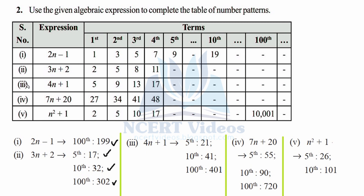For the third expression 4(n + 1), we need to find the 5th, 10th, and 100th terms. For the 5th term: 4×(5+1) = 4×6 — wait, putting n = 5: 5×4 + 1 = 21. For the 10th term: 10×4 + 1 = 41. For the 100th term: 100×4 + 1 = 401.